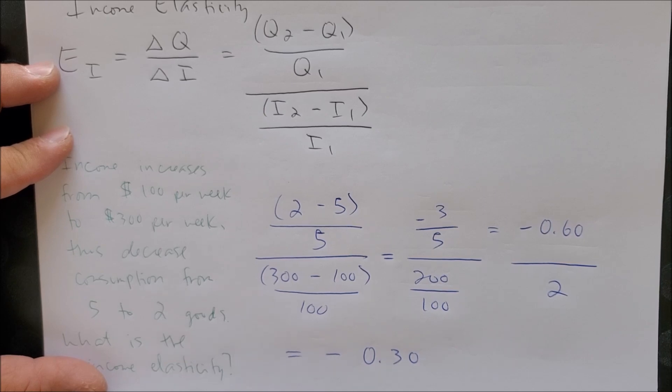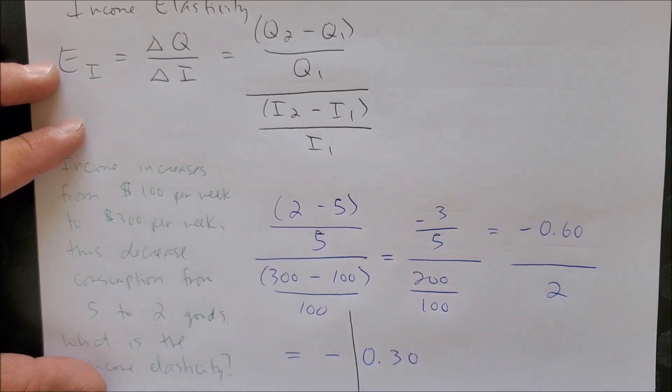This further becomes negative 0.60 over 2, and now we have a final answer of negative 0.30. Now in elasticity we don't have any negative numbers because we have from 0 to infinity as our range, but remember that this is not price elasticity, this is income elasticity, which means we're going to have a two-part answer.